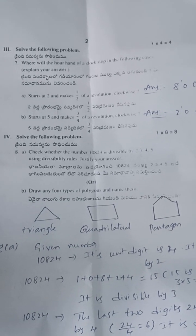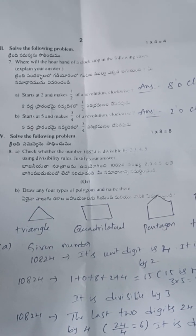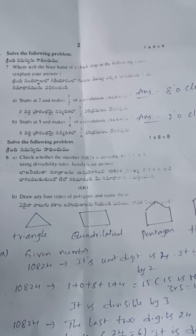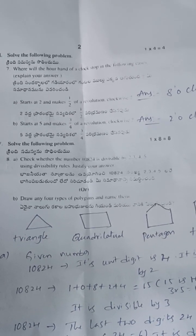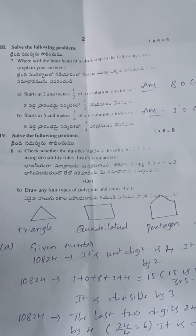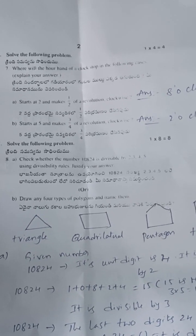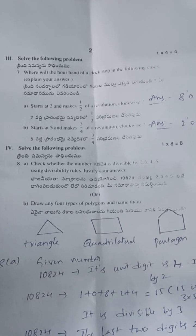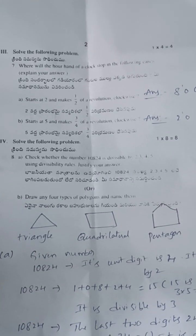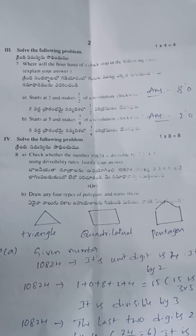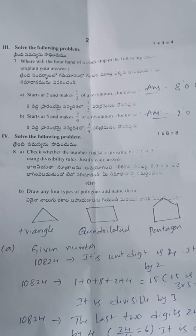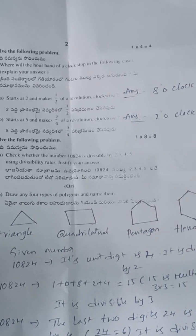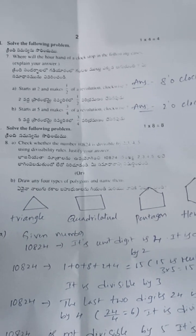Next, start at 5 and make three-quarters of a revolution. Three-quarters of a revolution is 9 hours. So 5 plus 9 equals 14 hours, and 14 hours is equivalent to 2 o'clock.